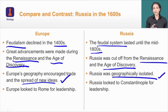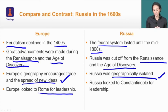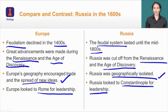While most of Europe was making great advancements during the Renaissance and the Age of Discovery — because European geography encouraged trade and the spread of new ideas — Russia was cut off from these developments due to geographic isolation. There were also big religious differences: most of Europe looked to Rome and the Catholic Church for leadership, while Russia looked to Constantinople. This schism in the church happened in the mid-11th century, so this had been going on for quite some time.